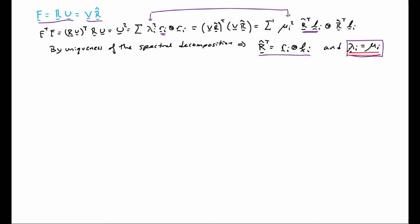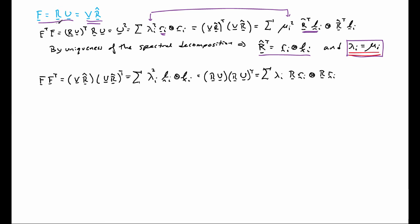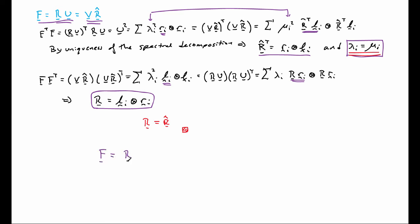The last thing to show is that R equals R̂. Consider FF transpose: using the second decomposition, this equals λ_i squared L_i tensor outer product L_i (since μ_i equals λ_i). Rewriting using the first decomposition with F equals RU, we get λ_i squared R R_i outer product R R_i. By uniqueness of spectral decomposition, R equals L_i tensor outer product R_i, and comparing terms we see that R equals R̂. This completes the proof: F can be written as a rotation R times symmetric positive definite tensor U, or equivalently, symmetric positive definite tensor V times that same rotation R.